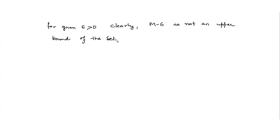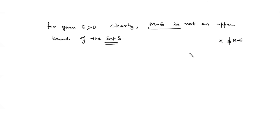Why is M minus epsilon not an upper bound? Because M is the least upper bound. If M is the least upper bound, then M minus epsilon cannot be an upper bound. If M minus epsilon is not an upper bound, it means not all elements of set S are less than or equal to M minus epsilon — so there must exist an element in S which is greater than this number. Therefore, there must exist an element Y in S such that Y is greater than M minus epsilon.